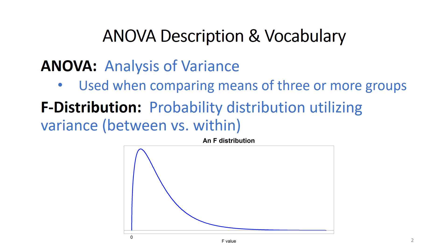So first off, what is ANOVA? ANOVA is the acronym for Analysis of Variance. We use ANOVA when we're comparing means of three or more groups. In our last series of lectures we talked about the T-distribution, where you're comparing two groups — whether it was two independent groups, say property offenders versus violent offenders or men versus women, or if it was a paired T-test comparing the same group of individuals on two different measurements.